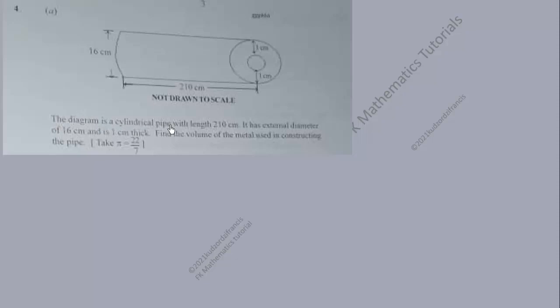Question four of 1C 2021, called Mathematics or General Mathematics. The question is on a cylindrical pipe. The diagram is a cylindrical pipe with length 210 centimeters, an external diameter of 16 centimeters, and it is 1 centimeter thick. Find the volume of the metal used in constructing the pipe. We take pi equal to 22 over 7.